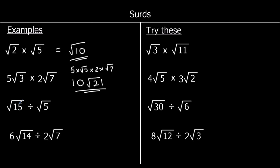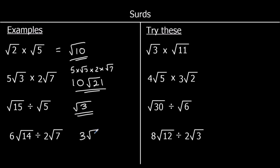For dividing: root 15 divided by root 5 — 15 divided by 5 is 3, so root 15 divided by root 5 is root 3. And for 6 root 14 divided by 2 root 7: divide the ordinary numbers — 6 divided by 2 is 3. Then 14 divided by 7 is 2, so root 14 divided by root 7 is root 2. That gives 3 root 2.